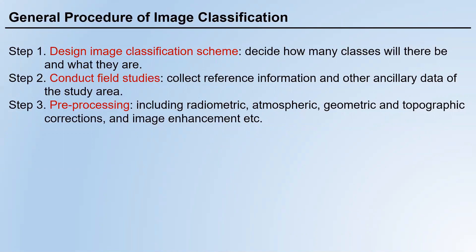You also need to choose a method. Step two is to conduct field studies — collect reference information and ancillary data of the study area. This is not always necessary because some researchers may have already done this, and you can find reference spectral libraries from agencies like NOAA and USGS.